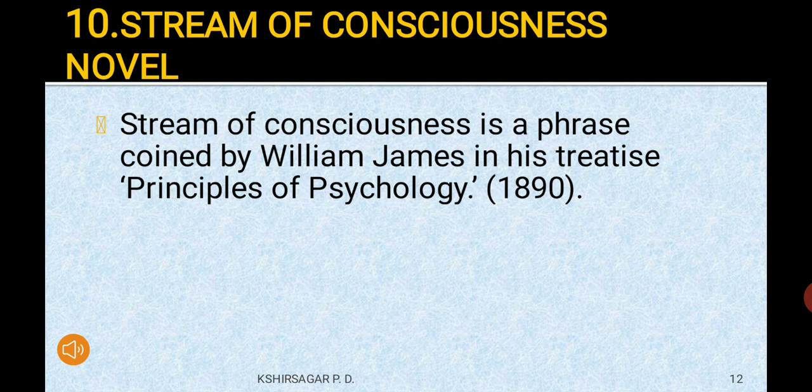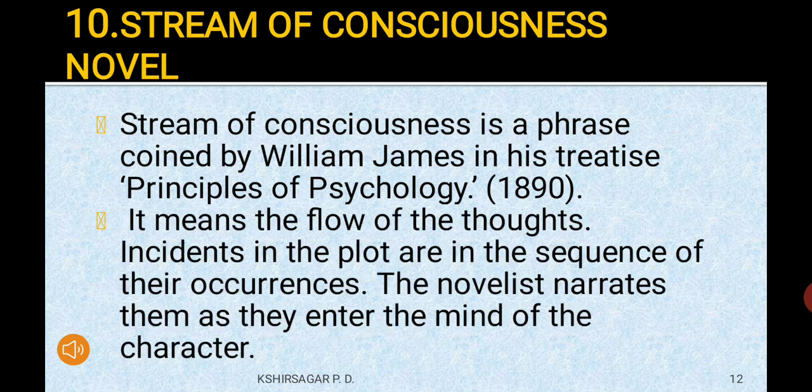Next is the stream of consciousness novel. Stream of consciousness is a phrase coined by William James in his treatise 'Principles of Psychology' in 1890. It means the flow of thoughts. Incidents in the plot are in the sequence of their occurrences, and the novelist narrates them as they enter the mind of the character.